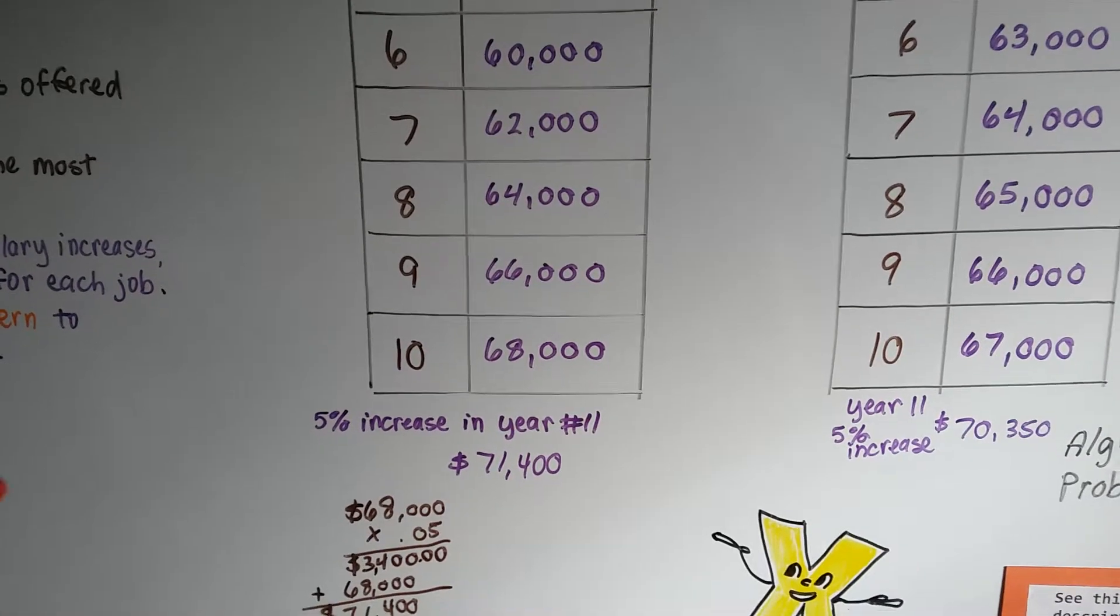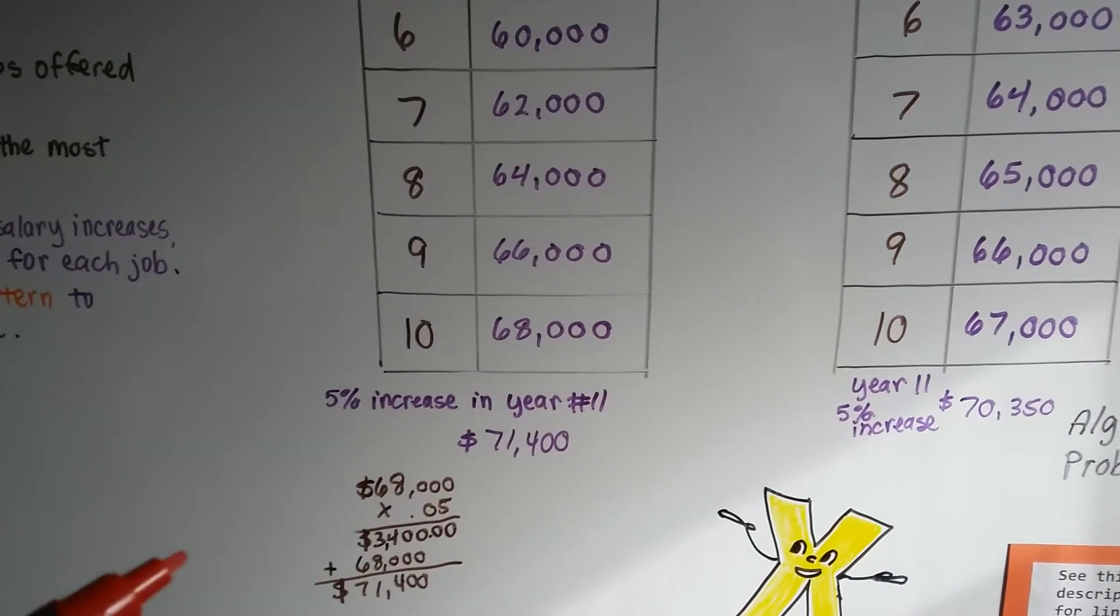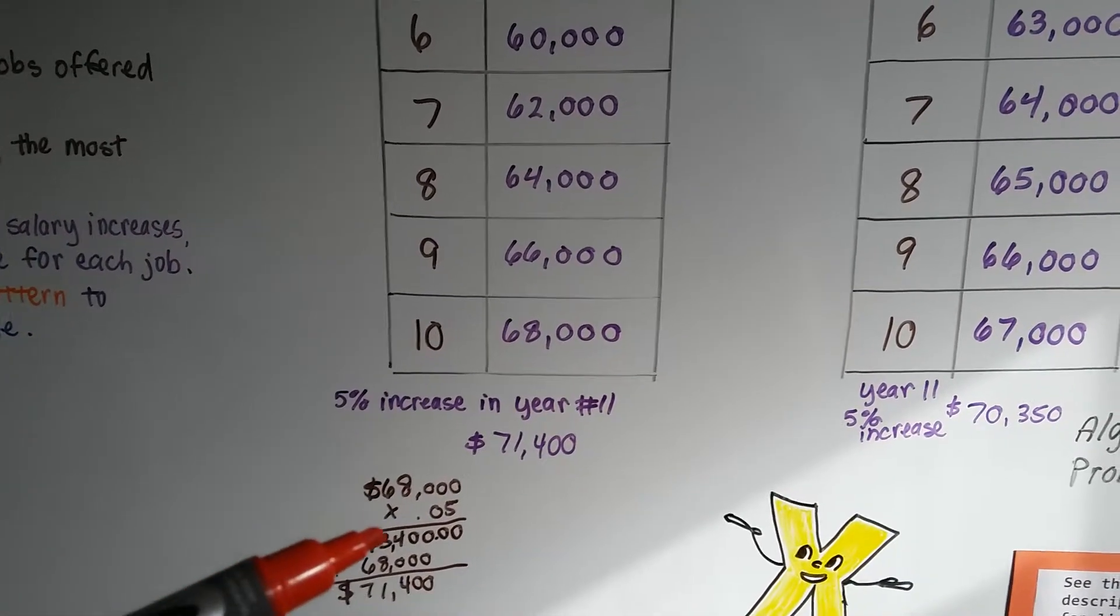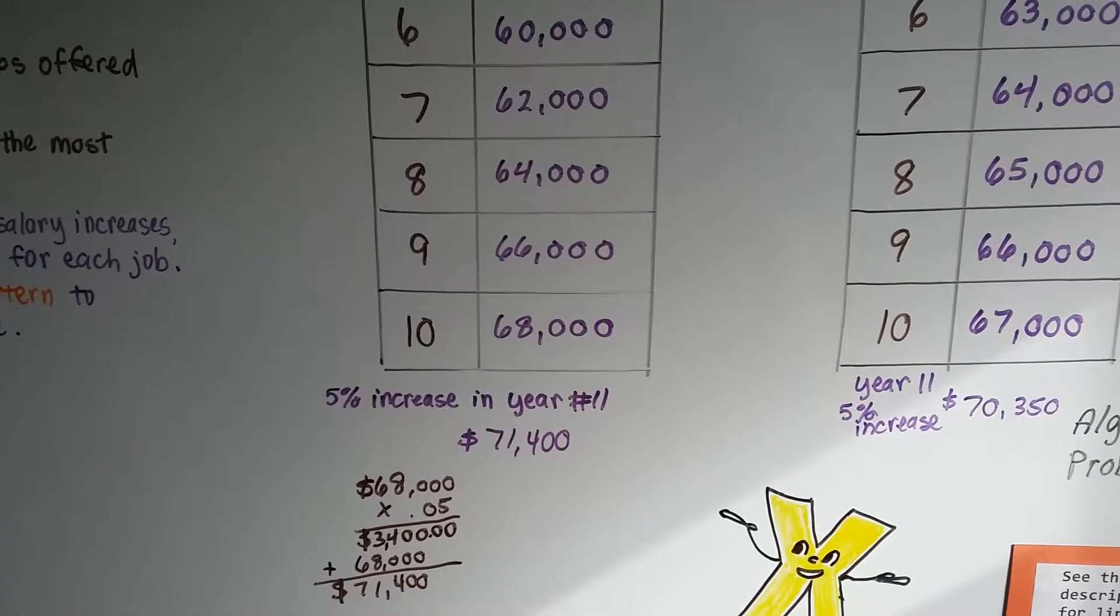The way I found the percentage increase, it's a 5% increase. It could be written as a decimal as .05, see? We just multiply it by the $68,000. That tells us the amount of the raise, and we add it to the $68,000 to get the $71,400.